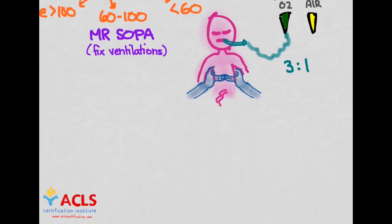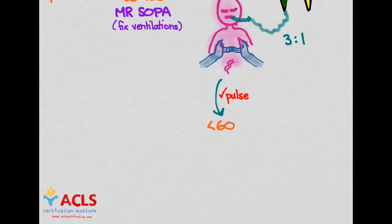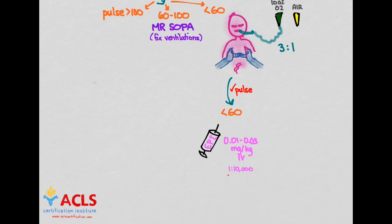Now, soon it becomes time, again, to check another pulse. And you do. And unfortunately, it is less than 60. So while you're continuing the chest compressions and the ventilations, you are also now administering a dose of epinephrine at 0.01 to 0.03 milligrams per kilogram IV of the 1 to 10,000 solution. And so you continue these compressions and ventilations with the epi flowing. And then you check the pulse again.